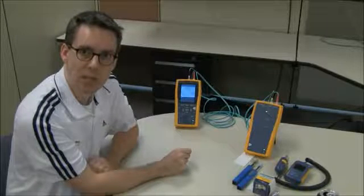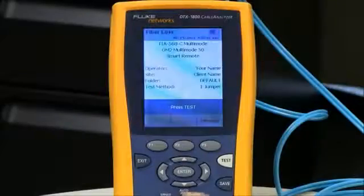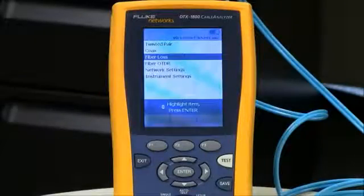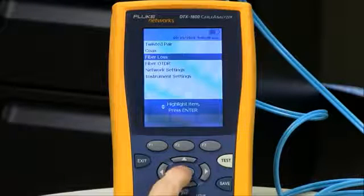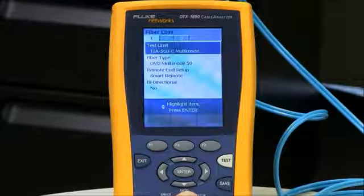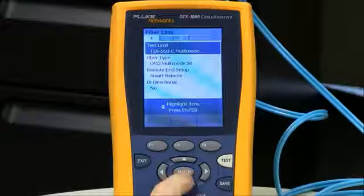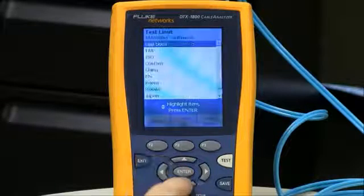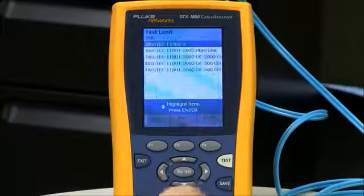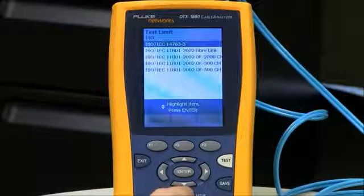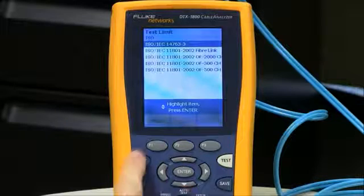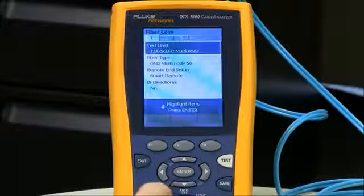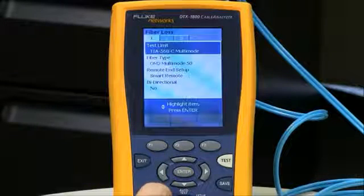Let's talk about setting up the DTX cable analyzer. I'm going to rotate the dial to setup, and with fiber last highlighted, I'm going to hit the Enter key. My test limit is currently set to TIA. If I wanted to change that to ISO, I would hit the Enter key, F1 more, and go down to ISO, where I see the 14763-3 standard.